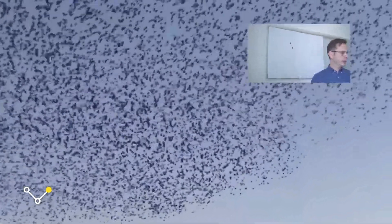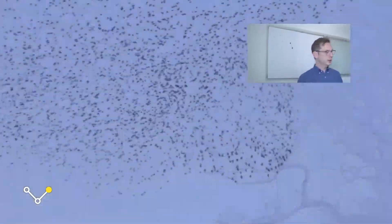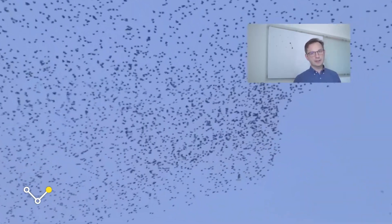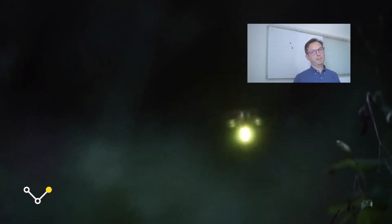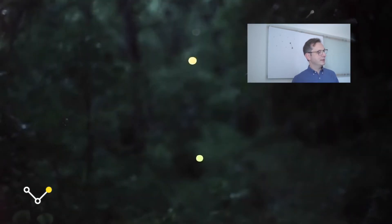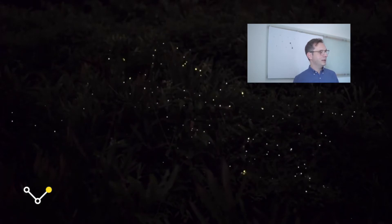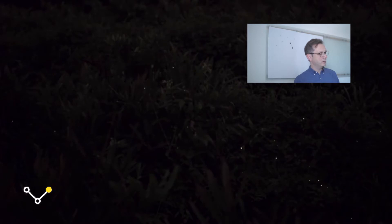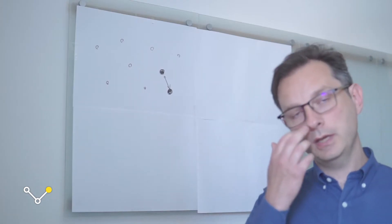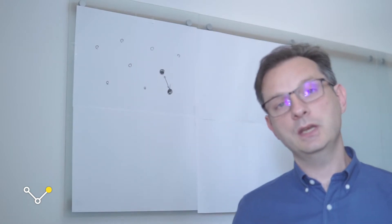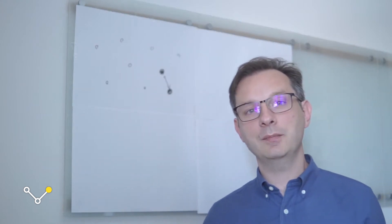Il terzo esempio che andiamo a vedere è la sincronizzazione delle lucciole. La sincronizzazione è uno dei problemi più difficili da realizzare, anche nei sistemi informatici, e la sincronizzazione delle lucciole è una delle cose più sorprendenti che ci sono in natura. La sincronizzazione delle lucciole che vivono nel sud-est asiatico avviene sia dal punto di vista biologico — per sembrare un animale più grande e scoraggiare i predatori — sia per agevolare la sessualità della specie.